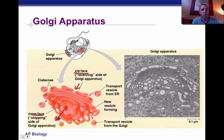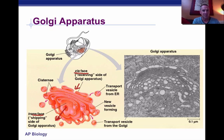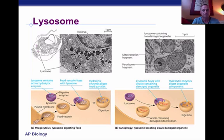Proteins will come from the endoplasmic reticulum into the Golgi apparatus. There, those proteins may be modified in some way, and they'll be shipped out through the trans face of the Golgi apparatus. One such vesicle that can be transported out will be a lysosome. The lysosome is simply a vesicle — a round bubble that contains hydrolytic enzymes.